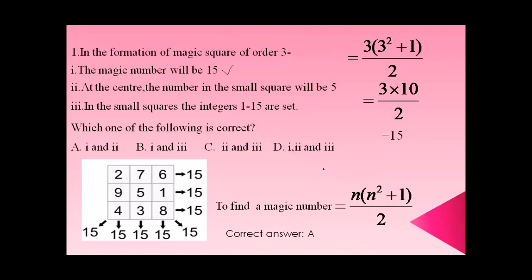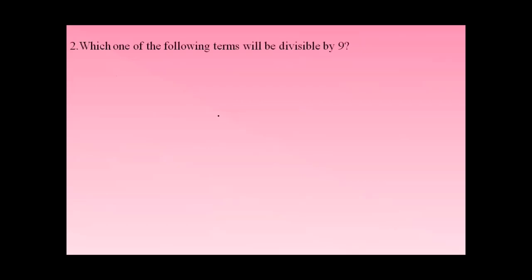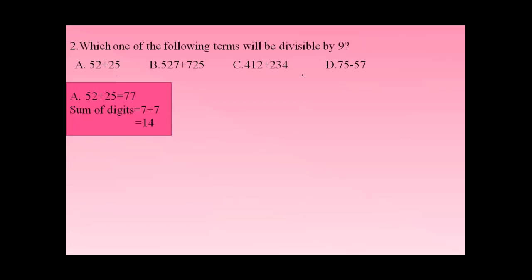Question two: Which of the following terms is divisible by 9? You may have learned the divisibility rule for 9 in Class 6. Option A: 52 + 25 = 77. The sum of digits of 77 is 7 + 7 = 14, and 14 is not divisible by 9, so 77 is not divisible by 9.